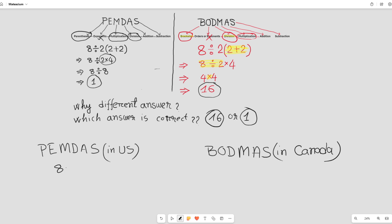Regarding the expression 8 divided by 2, which is multiplies by 2 plus 2 in the bracket, the ambiguity arises from how multiplication and division should be prioritized when they appear together.